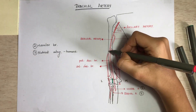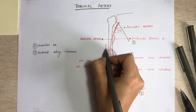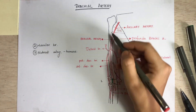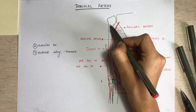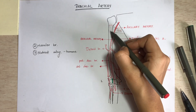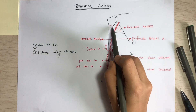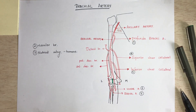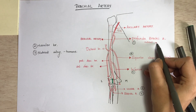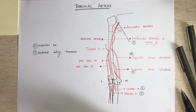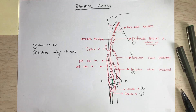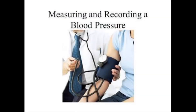Another branch of the profunda brachii is the deltoid branch, which runs upwards and anastomoses with the descending branch of the posterior circumflex humeral artery — a branch of the axillary artery. The profunda brachii also gives a nutrient artery to the humerus, though the main nutrient artery to the humerus comes directly from the brachial artery itself.